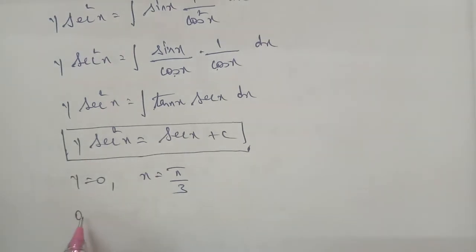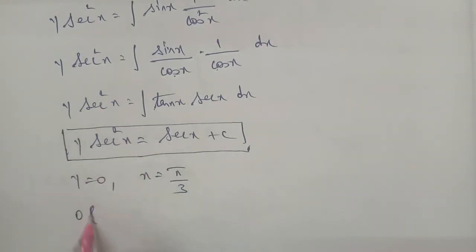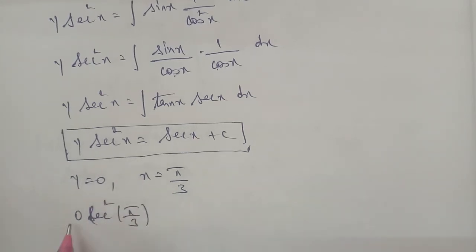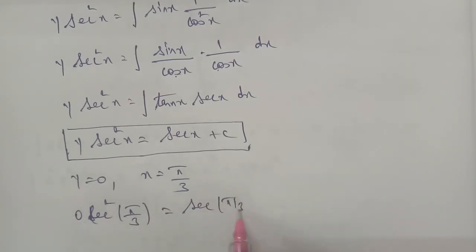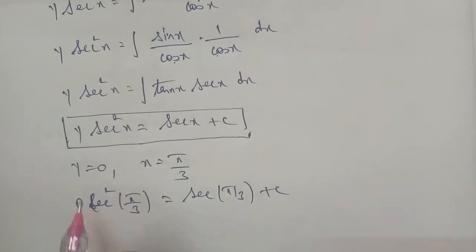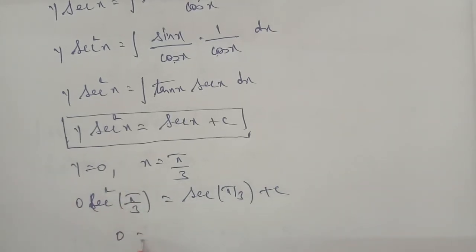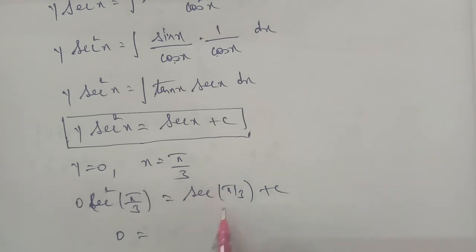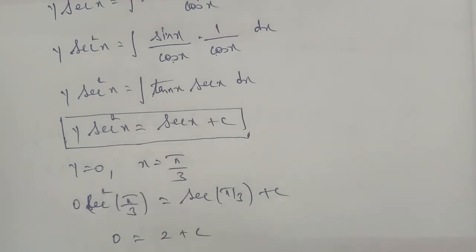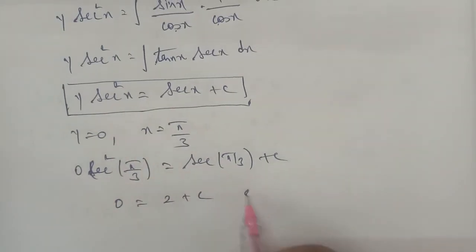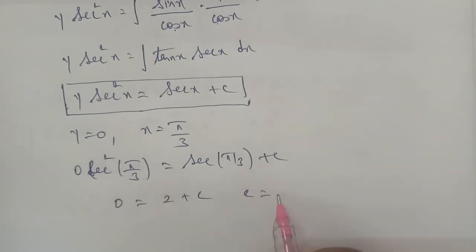Substituting y equal to 0 and x equal to π/3: 0 times sec²(π/3) equals sec(π/3) plus c. Since sec(π/3) equals 2, we get 0 equals 2 plus c, so c is equal to minus 2.